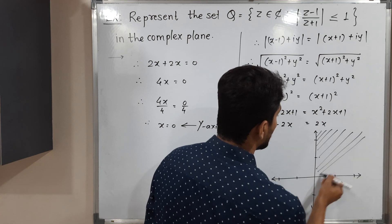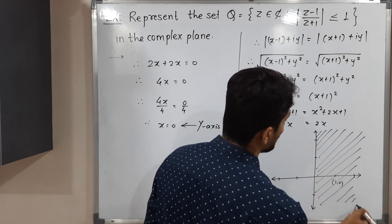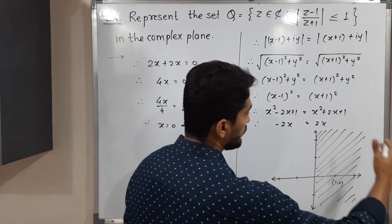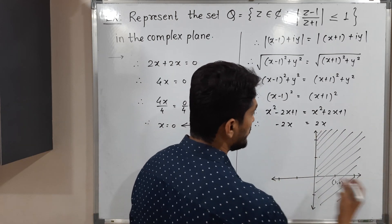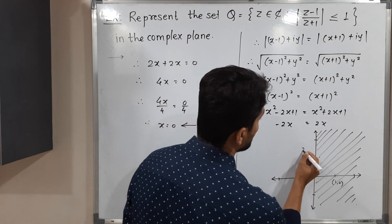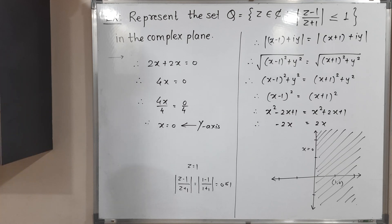So the required region is the half of the complex plane which lies on the right-hand side of the Y-axis, i.e., where X is greater than or equal to 0 (X equals 0 being the boundary). In this way, we have represented the given set Q in the complex plane. Make a screenshot of it. Thank you, see you.